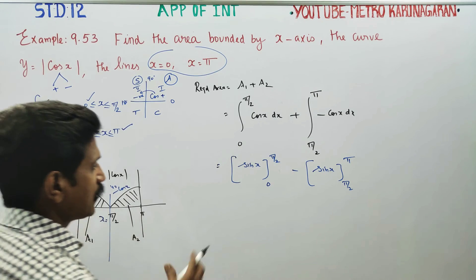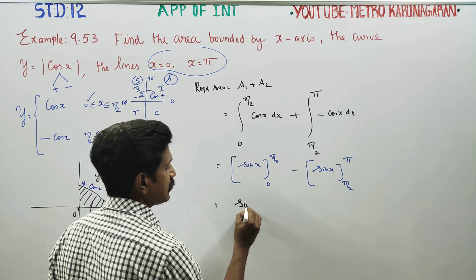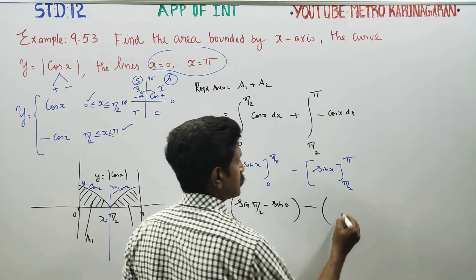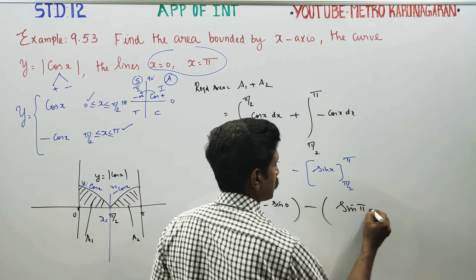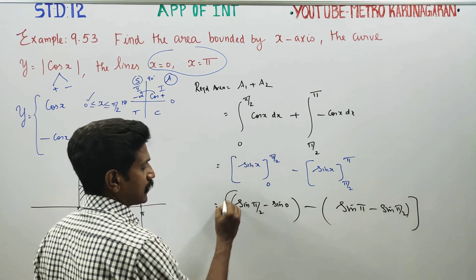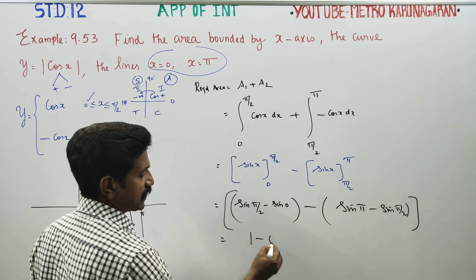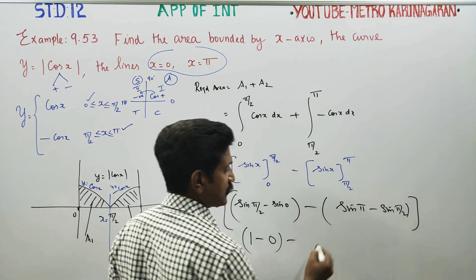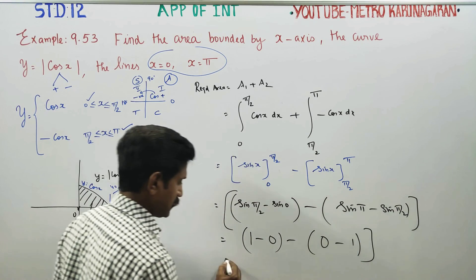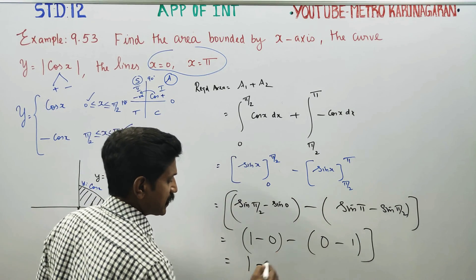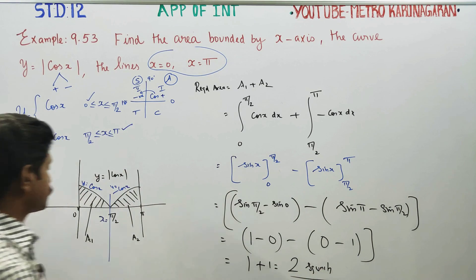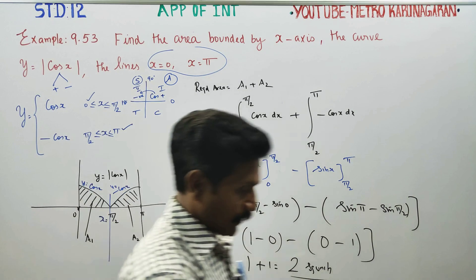Upper limit minus lower limit: sin(pi/2) minus sin(0), then minus of sin(pi) minus sin(pi/2). Sin(pi/2) is 1 minus 0, minus sin(pi) is 0, minus sin(pi/2) is 1. Therefore, 1 minus (negative 1) equals 2. The answer is 2 square units. Thank you.